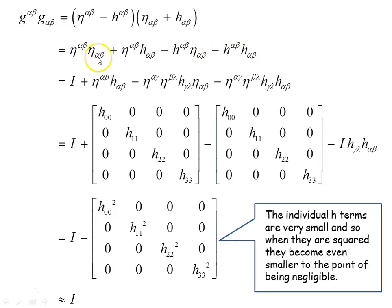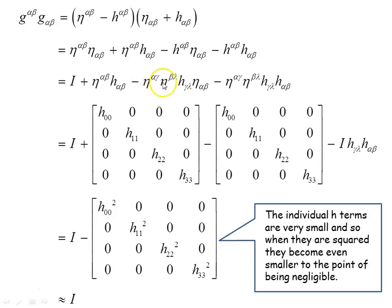The second and third terms: using our earlier results, the Minkowski metric portion gives the identity, the H portions give the same h-object, and therefore the second and third terms cancel each other out. For the last term, the two lowered H terms multiplied together give us the H-squared term, which we take to be approximately zero because the individual h terms across the diagonal were very small — well less than one — and squaring them makes them even smaller.